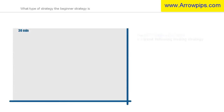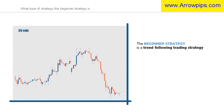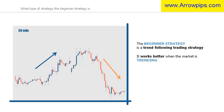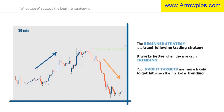The beginner strategy is a trend-following trading strategy. It works better when the market is trending. If the market is trending, your profit targets are more likely to get hit, so long as you trade in that direction.